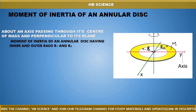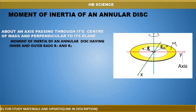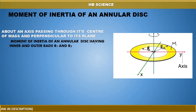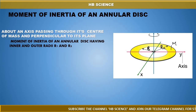This is the moment of inertia. The moment of inertia is calculated about an axis passing through its center of mass and perpendicular to its plane. This axis is shown in blue color. The blue axis passes through the center of mass of the annular disk. Yes or no? Yes.